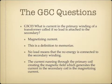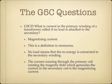What is current in the primary winding of a transformer called if no load is attached to the secondary? This is called magnetizing current, and this is a definition you'll need to memorize. No load means there's nothing to draw energy from the secondary winding. So essentially, all that happens is a magnetic field builds up in the transformer. The current running through the primary coil creating the magnetic field is the magnetizing current, but since there's no load, all it does is magnetize the transformer.